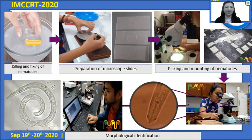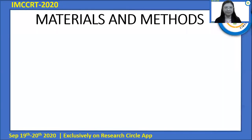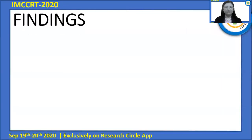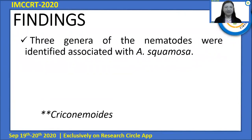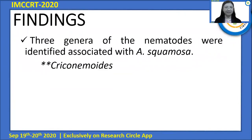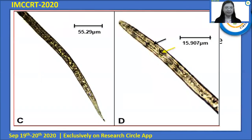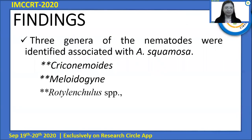For morphological identification, the well-mounted plant parasitic nematodes were observed and studied to determine their genus identity. For the findings, three genera of nematodes were identified as associated with Anona Squamosa: Criconemoides, Meloidogyne, and Rotylenchulus.